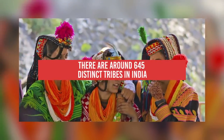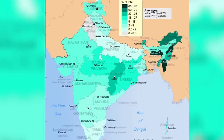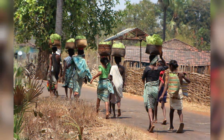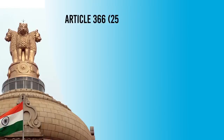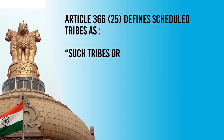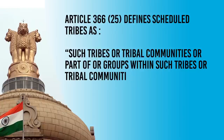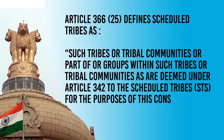There are around 645 distinct tribes in India. The constitution of India officially recognizes the tribal population as the scheduled tribes in the fifth schedule, which is often grouped together with the scheduled caste in the category scheduled caste and tribes. The tribal people of India are eligible for certain constitutional benefits and perks. Article 366.25 defines scheduled tribes as such tribes or tribal communities or part of or groups within such tribes or tribal communities as are deemed under article 342 to be scheduled tribes for the purpose of this constitution.